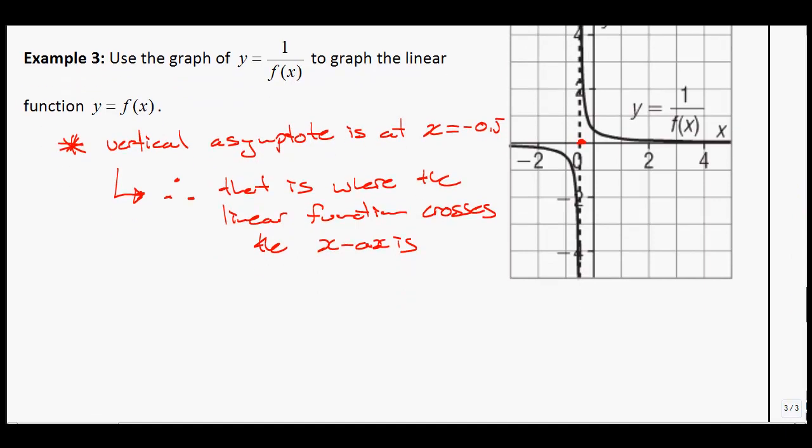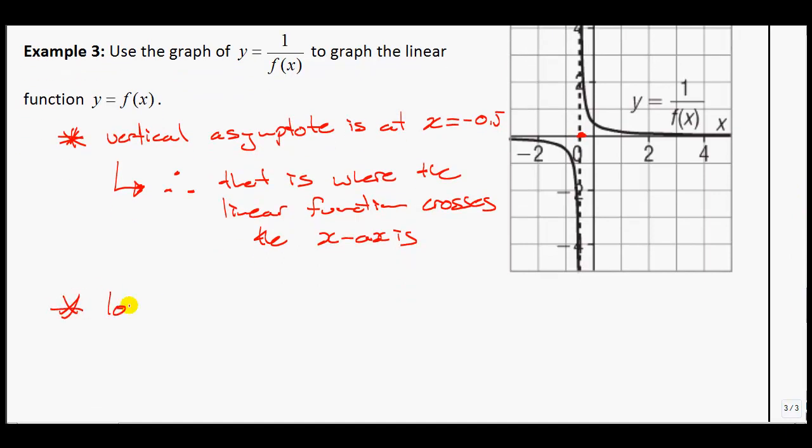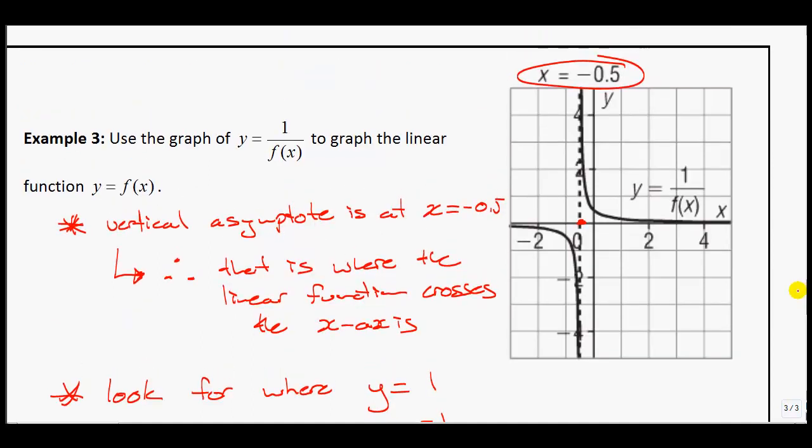Now, the next thing that we know is we're going to look for where we have y equals 1 and y equals negative 1. Right? We're looking for those common points, because we know that the graphs intersect at those common points. So I would see that this reciprocal function that we have here is at 1 at that point, and it's at negative 1 at that point.